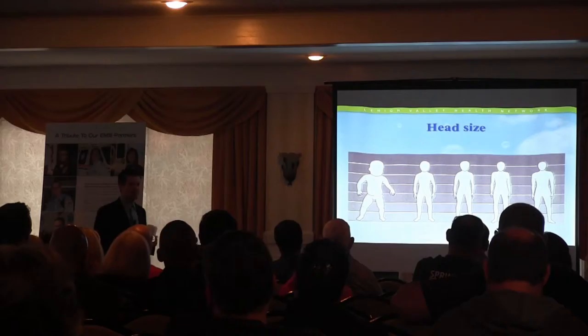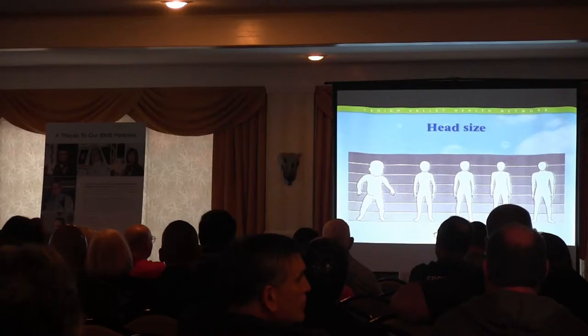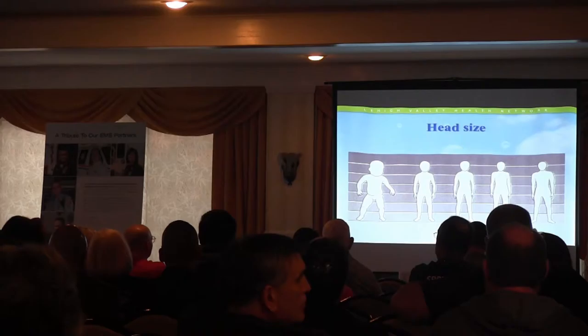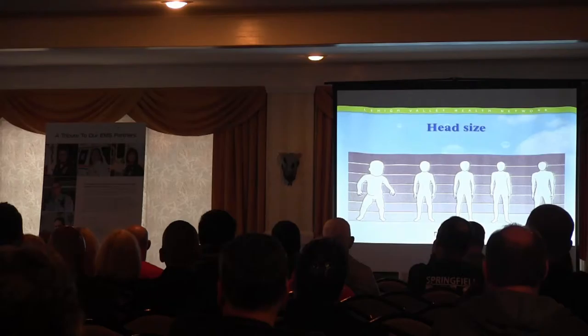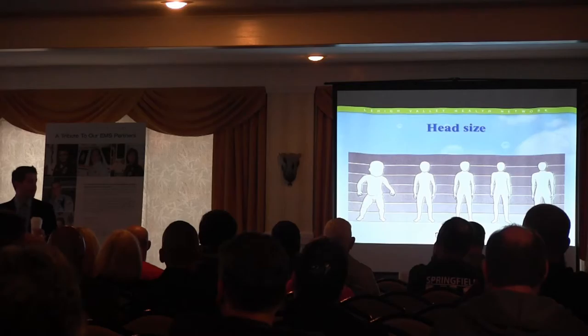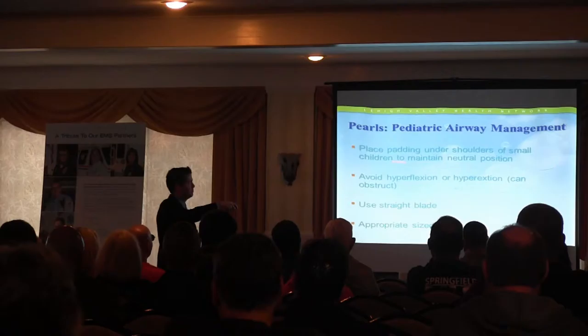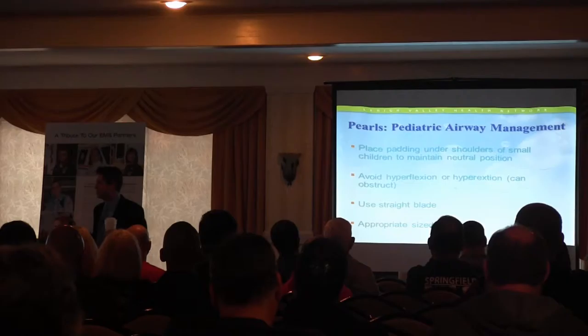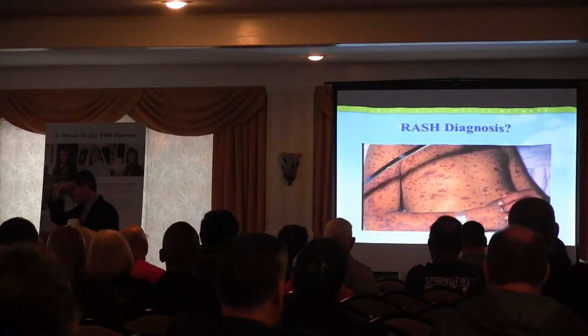Infants have big wobbly heads — big heads, little bodies. This illustration shows how big their head is proportionally compared to adults. For trauma management, because their heads are so large, when they fall they hit their head. When positioning for intubation, bring the head forward — put padding under the shoulders to avoid hyperextension or hyperflexion. That helps open the airway properly.